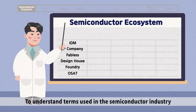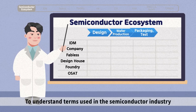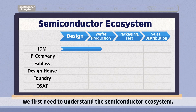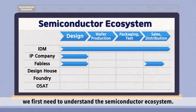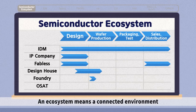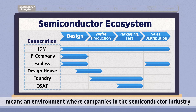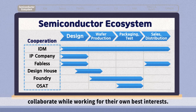To understand terms used in the semiconductor industry, we first need to understand the semiconductor ecosystem. An ecosystem means a connected environment where creatures live together. The semiconductor ecosystem means an environment where companies in the semiconductor industry collaborate while working for their own best interests.